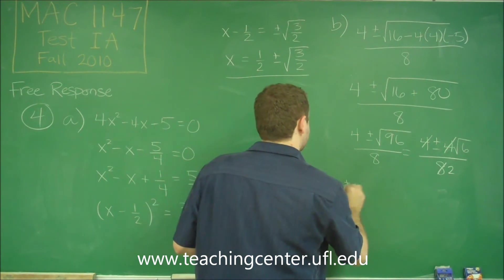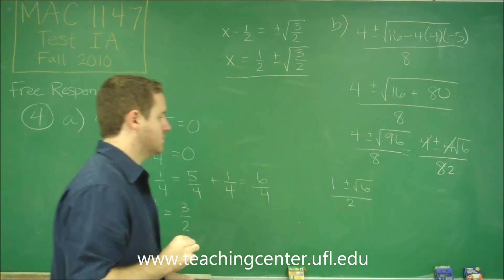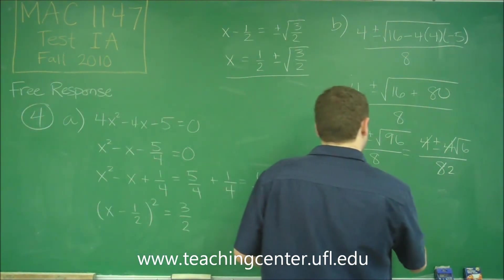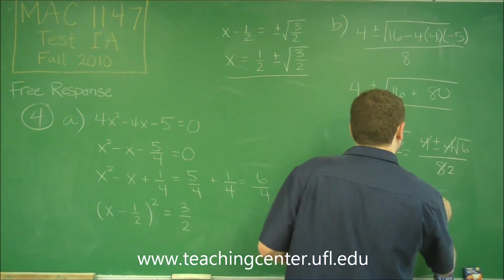We have 1 ± √6 all over 2, and we can further simplify this into 1/2 ± √6/2.